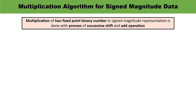The objective of this video is multiplication of two fixed-point binary numbers in signed magnitude representation. This is done with the process of successive shift and add operations. In general, even in daily life, if you perform multiplication with paper and pen, it is done by the process of successive shift and add. Let me explain with a numerical example.